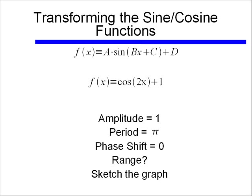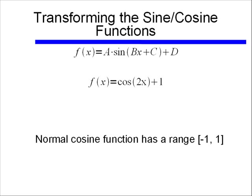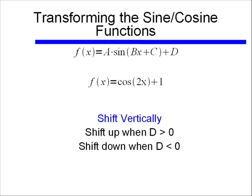Well what about the range? Well in this case we have a non-zero value for d. The normal cosine function has a range of negative 1 to positive 1, just like our sine. But because we have a value for d, we need to remember that if d is positive it's going to shift up by the value of d, and if d is negative it will shift the graph down by the value of d. Well in this case d is equal to 1, so we will be shifting this whole graph up vertically by 1.